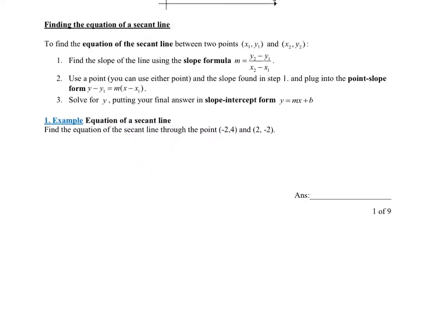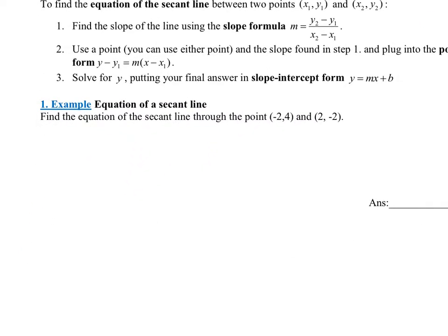So let's give this a try. It says find the equation of the secant line through the point (-2, 4) and the point (2, -2). So if we're given two points, the first thing we need to do is we want to find that slope. So let's find the slope. And remember, if you want to find the slope, the formula for slope is y2 minus y1 over x2 minus x1.